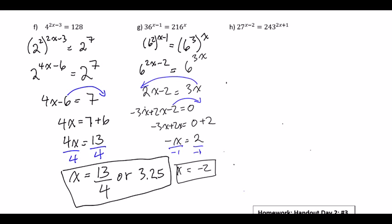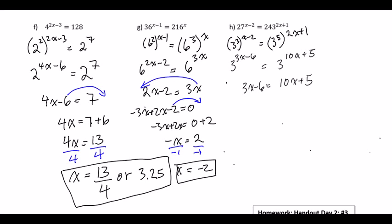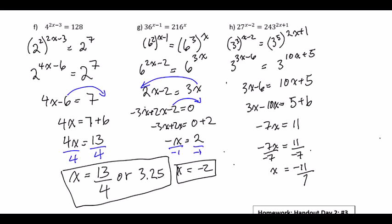This last problem I'm going to go through quickly — it shouldn't be too difficult. For the right side, 243 is 3 to the 5, raised to the 2x plus 1. We apply power of a power to both sides, then drop the base because both bases are the same. Moving all x's to one side and all numbers to the other and combining like terms, we end up with x equals negative 11 over 7 as our final answer. Your work for today: try working on number 3 in our set.